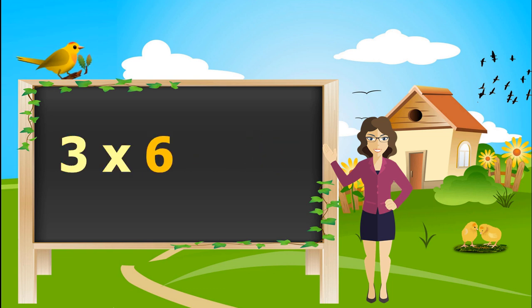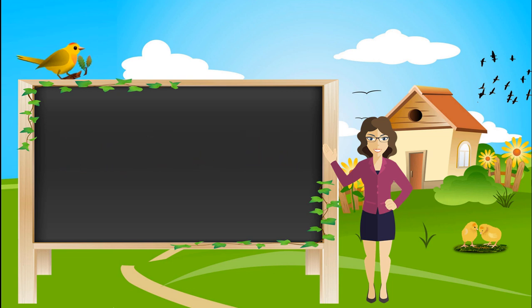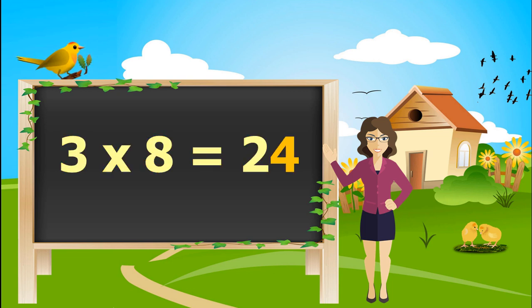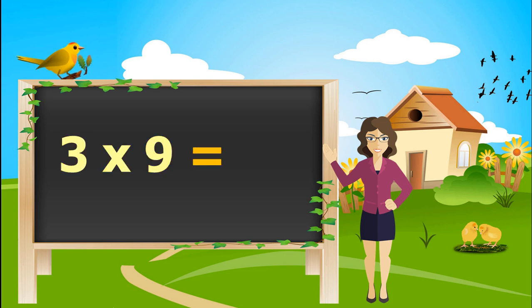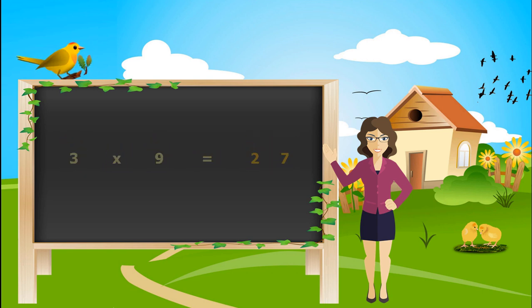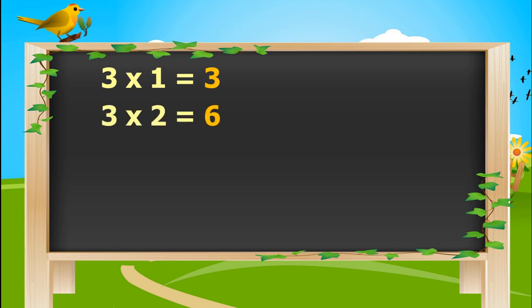3 times 6's are 18. 3 times 7's are 21. 3 times 8's are 24. 3 times 9's are 27. 3 times 10's are 30.